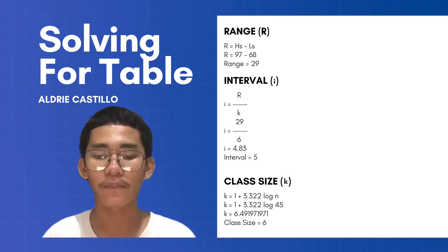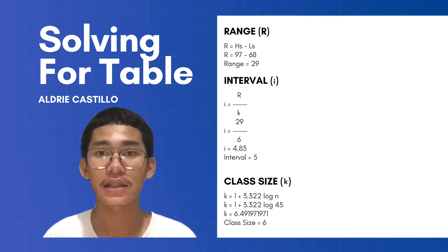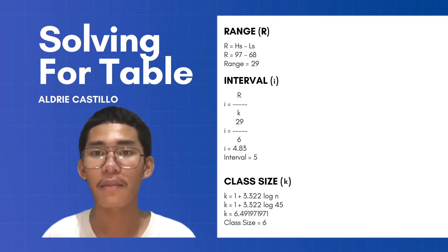When we say round off, we need to upsize the number even though the number next to it is lower than 5. The number next to it doesn't really matter.